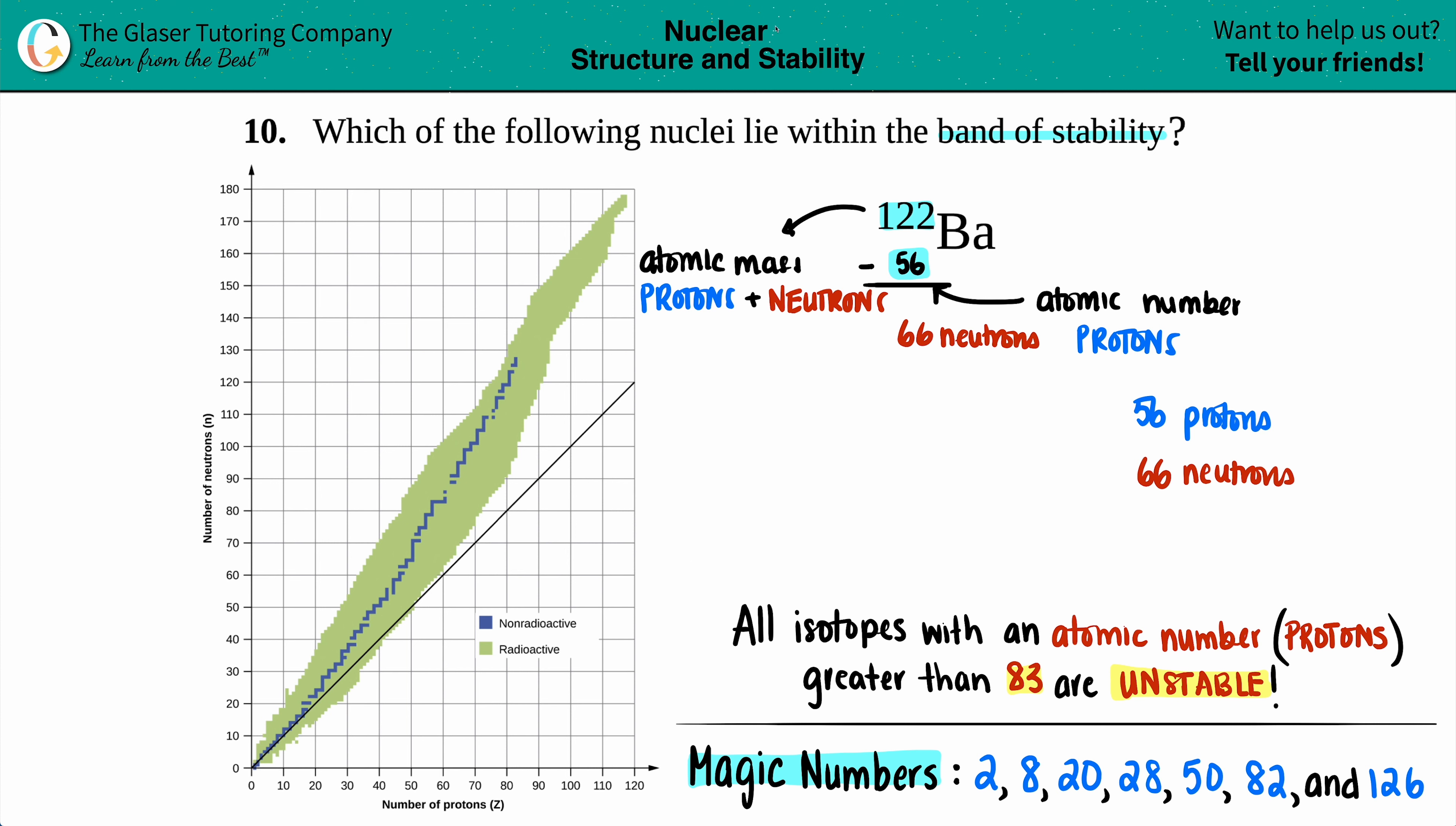Now the way to read this chart is all the blue ticks. Those are your stable atoms. There's only a few of them in this world. And if you're in the blue area, you are within the band of stability, but for all the green areas, that's unstability. That's not going to be within the band of stability. So all we got to do is track 56 and 66.